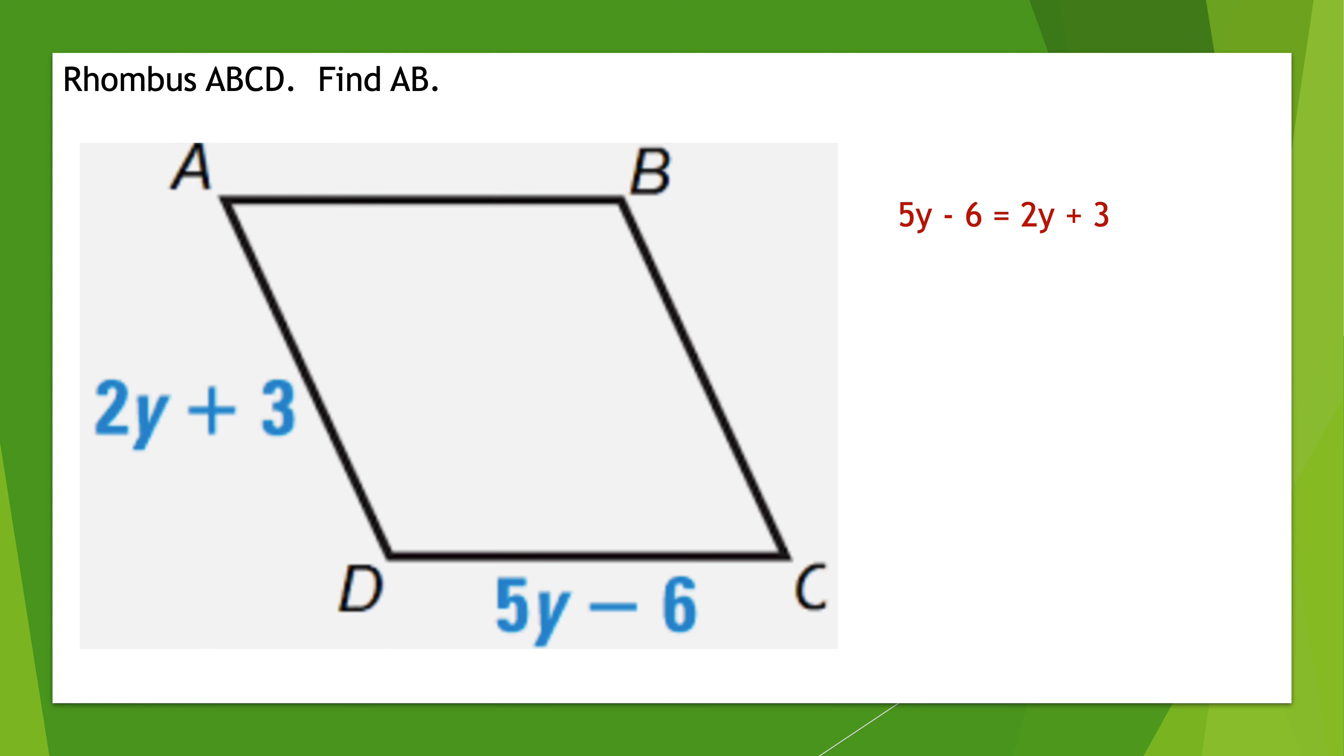5Y minus 6 has to equal 2Y plus 3. Opposite side, opposite operation. 3Y minus 6 is 3. Adding the 6. 3Y is 9. Dividing by 3. Y is equal to 3. Doesn't answer the question, though. What's AB? Well, AB equals any of the other sides, so I'll just do AD. 2 times 3 is 6. Plus 3 is 9. Substituting the 3 for Y, of course.